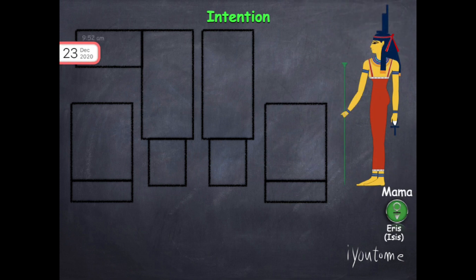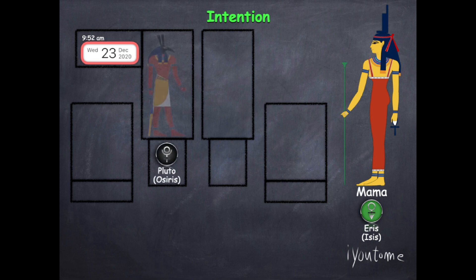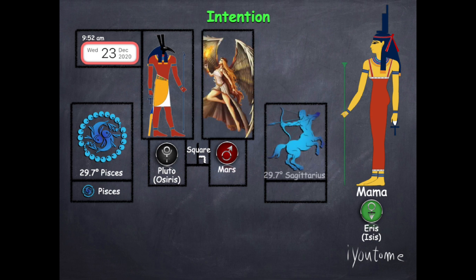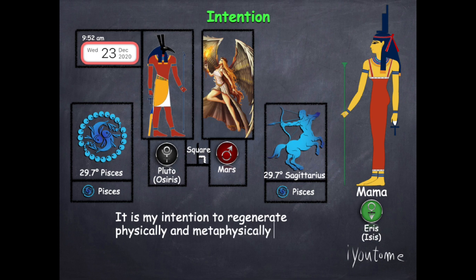The next alignment happens on December 23rd, 9:52 AM Eastern Standard Time. This alignment happens between Pluto regeneration of the subconscious mind in Pisces sub Pisces end of cycles which squares with Mars the change agent in Sagittarius the river of heaven in the sub harmonic Pisces end of cycles. This is my intention: It is my intention to regenerate physically and metaphysically using only moon law as we end the materialistic Piscean age.